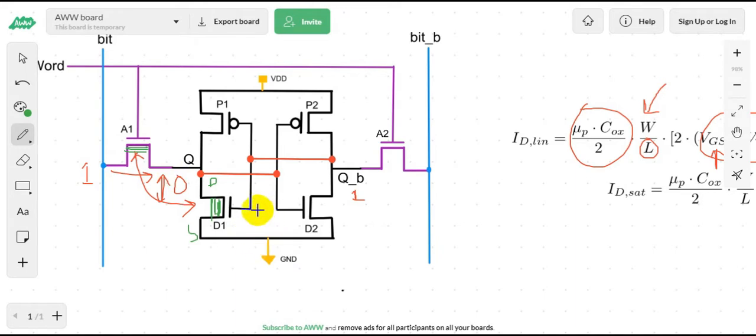So we have to increase the W/L ratio or the width of the D1 transistor compared to the A1 transistor. Also from Ohm's law we know that V is equal to IR.